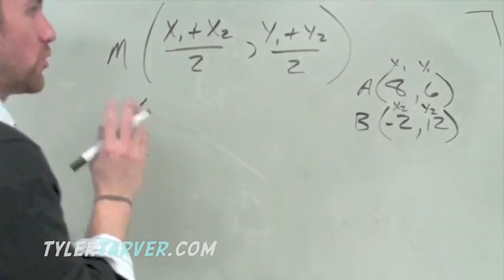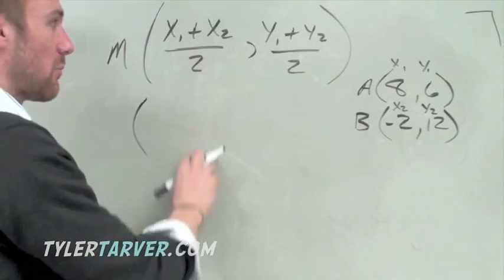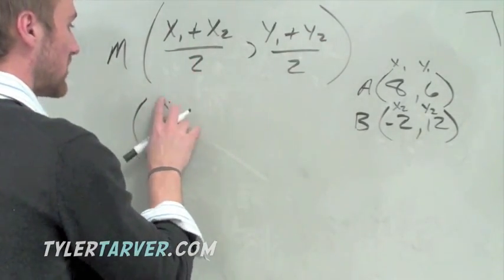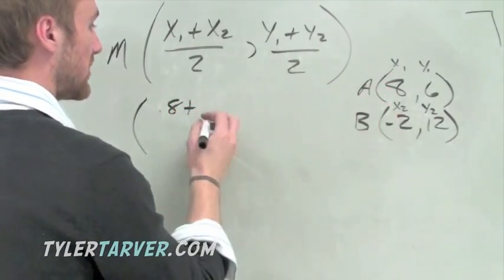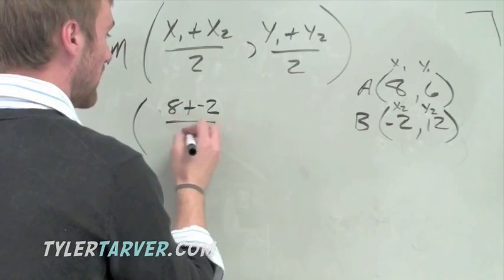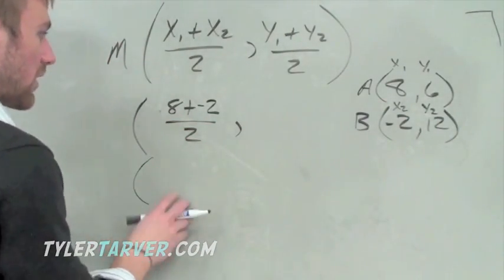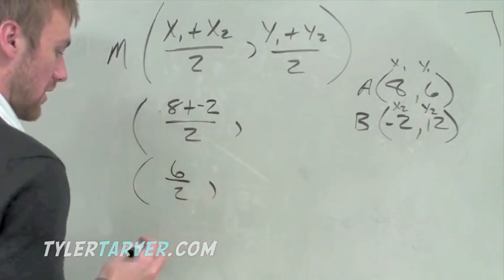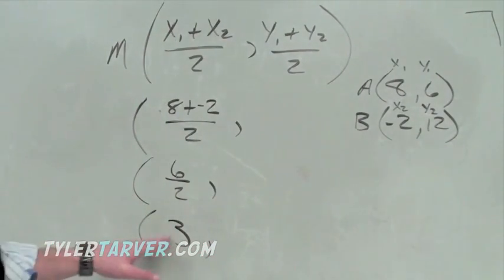Now all we've got to do is plug it in. You've got to look at this like it's two separate problems. This is its own problem and this is its own problem. So we do x1 plus x2, where we plug in our x1 is 8 plus x2, which is negative 2 divided by 2. We'll go ahead and finish off the x's. 8 plus negative 2 is positive 6 divided by 2, and 6 divided by 2 is 3. We're done. We found where the x is going to be.